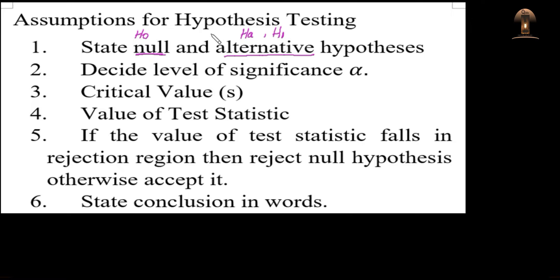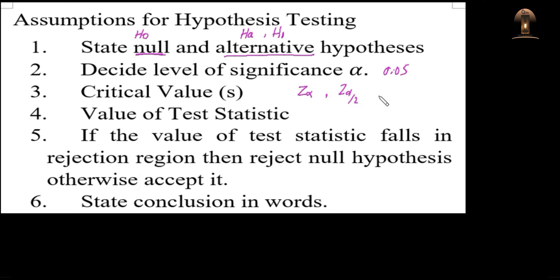We will discuss what these null and alternate hypotheses are, and then discuss some problems on them. The second step is to decide the level of significance, alpha. That is usually given to us — it is already specified. If it is not specified, we usually take alpha as equal to 0.05. Using this value of alpha, we find the values of the Z distribution: Z-alpha or Z-alpha/2. Or sometimes we find T-alpha or T-alpha/2, depending upon the distribution or statistic being used.